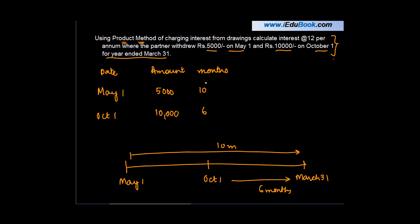In product method, we find out the product of amount and the time period. The time period can be in months or days. In this case, it is in months. Then we find out the product, which is equal to the amount into months or days as the case may be. So 10 into 5,000 gives you 50,000, and 6 into 10,000 gives 60,000.